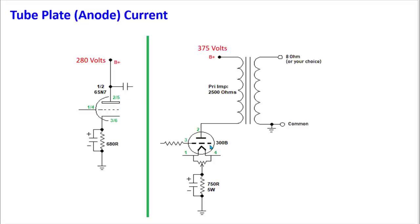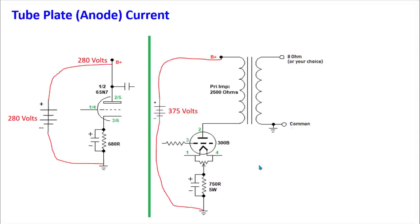Similarly, this circuit has 375 volts with a 300B tube. There's a small hum-bucking pot here, then a cathode resistor and cathode bypass capacitor. Note there's no plate load resistor — instead we have the primary of the output transformer. When you read a primary impedance like 2,500 ohms, that is the AC impedance reflected back into the circuit, not the DC resistance of the winding. To use this for measurement we need the actual DC resistance. We can redraw these circuits like a simple battery circuit with a 280-volt or 375-volt source.